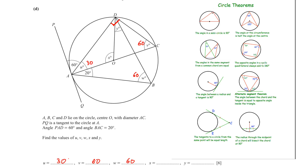Next is x. We need to understand that both lines are radii, so this is an isosceles triangle, meaning this angle is also equal to u, which is 30. To find x: x plus 30 plus 30 equals 180. So x equals 180 minus 60, giving x equals 120.